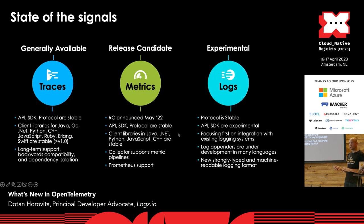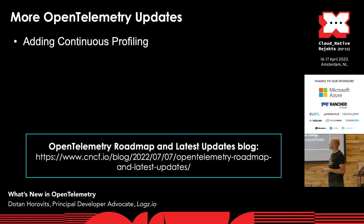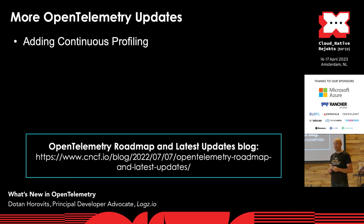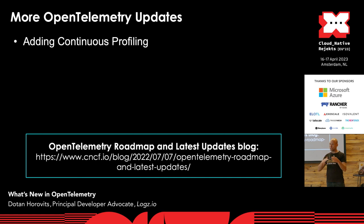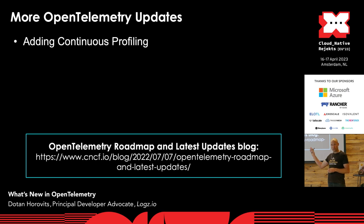Now let's talk about what's new beyond the main signals — venturing into new signals. The first is continuous profiling: traditional profiling of CPU, memory, and disk usage, but on a continuous fashion so you can identify trends and break down by instance, version, or function. There is already a very active working group looking into incorporating continuous profiling into OpenTelemetry.